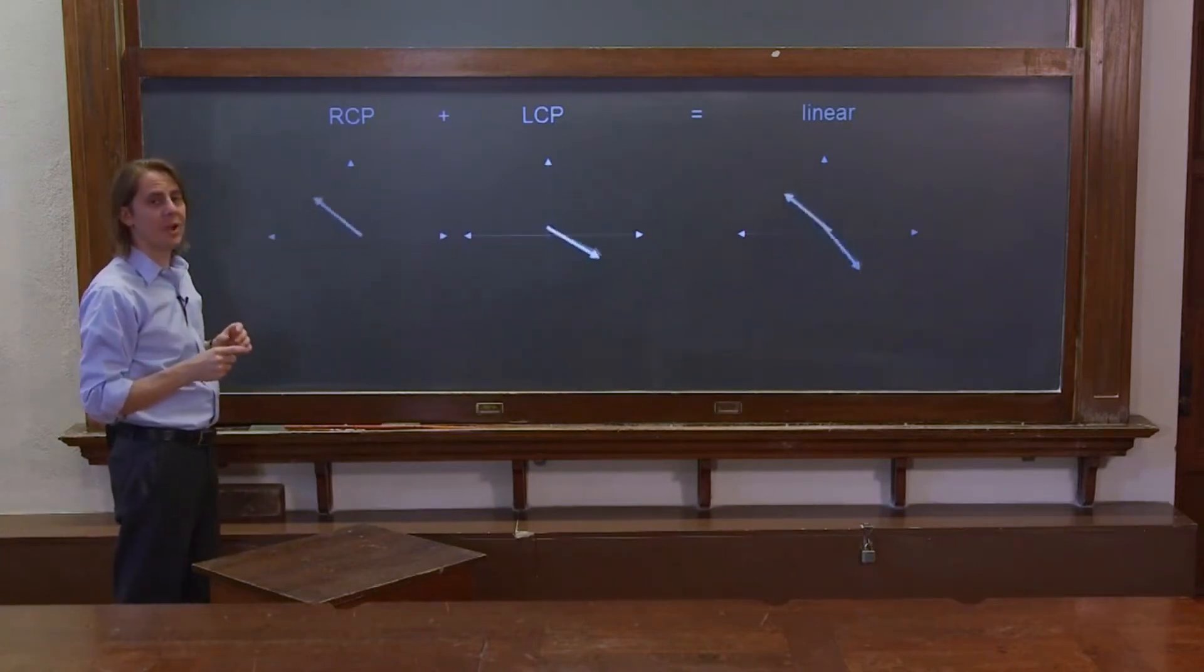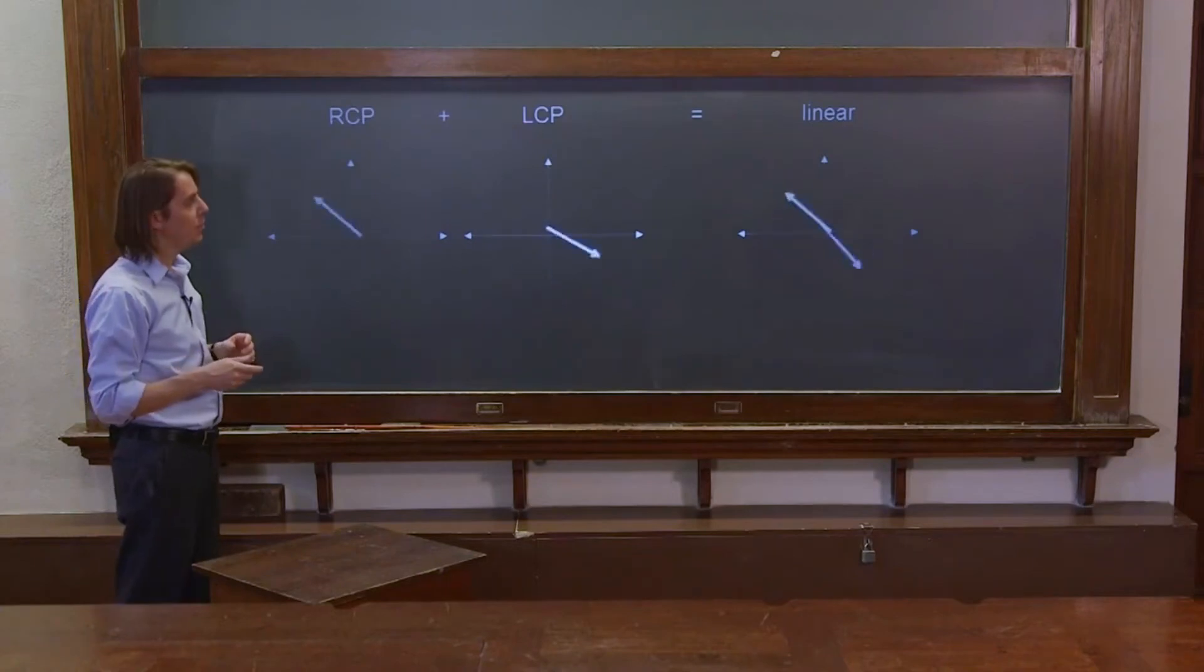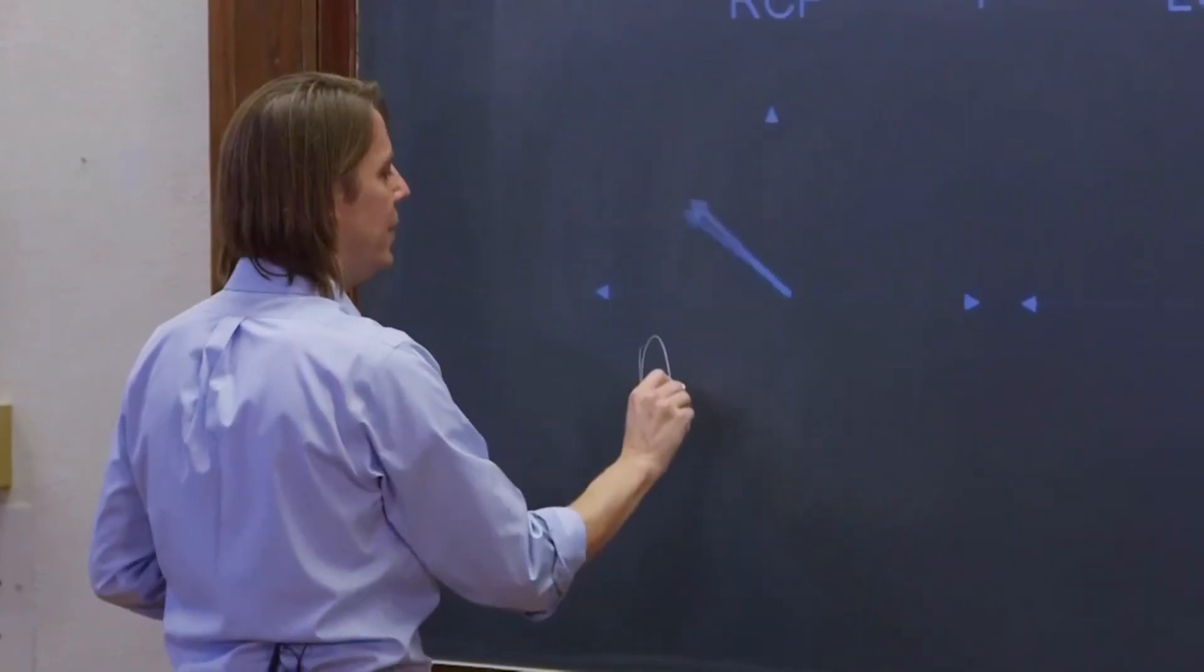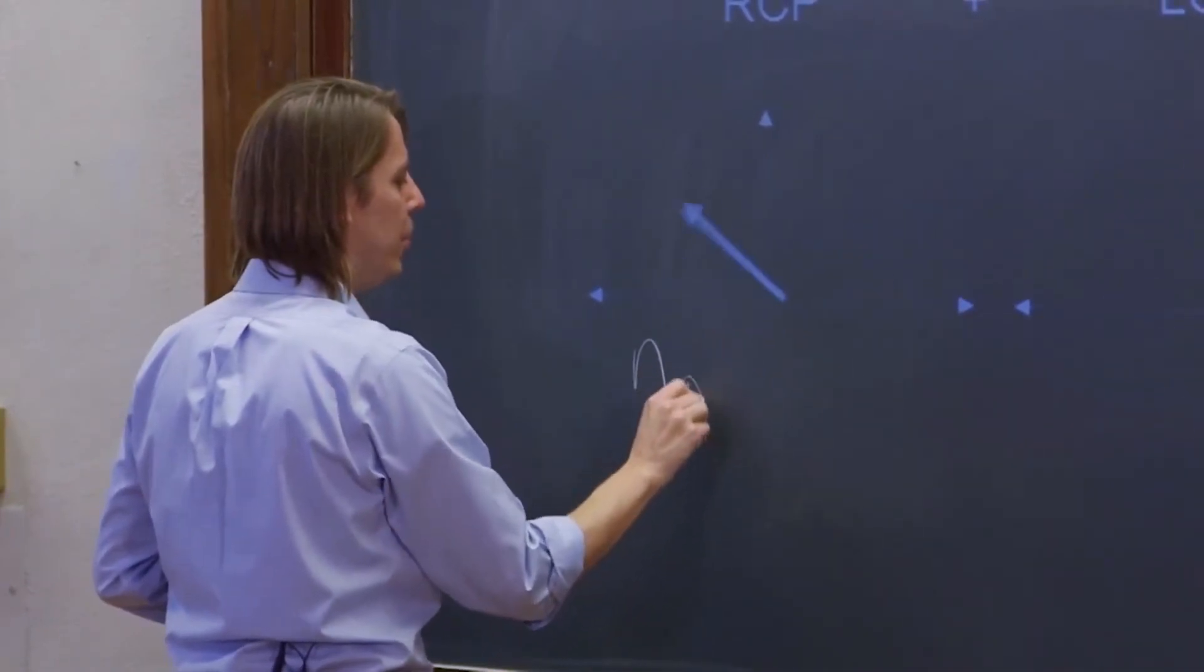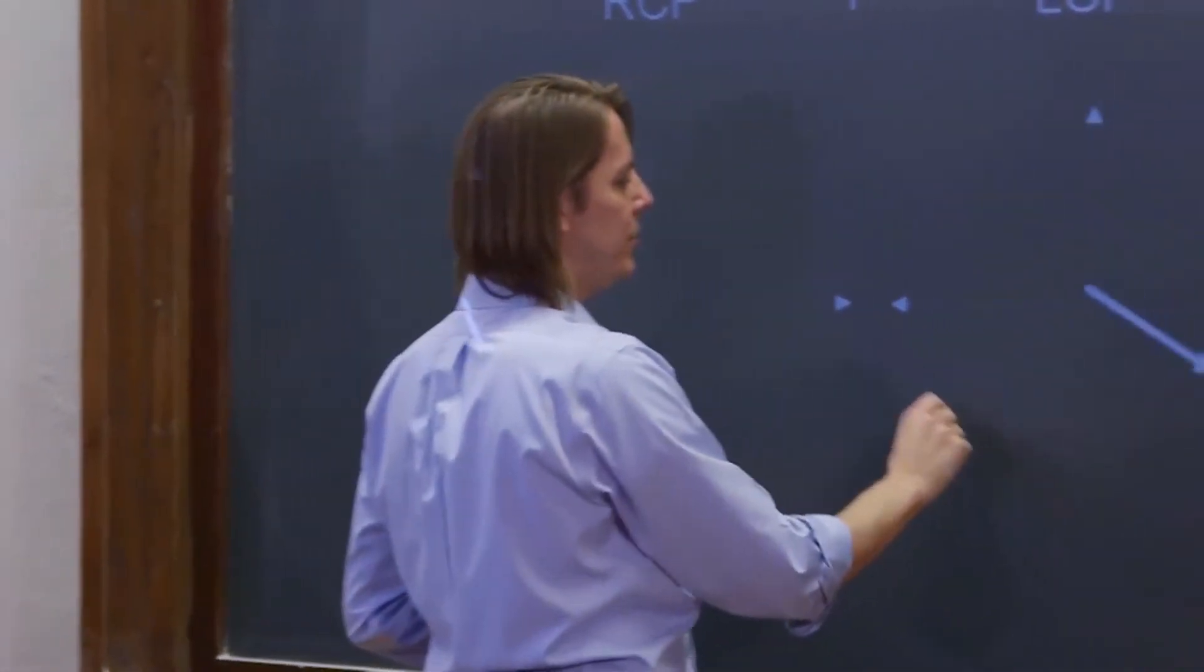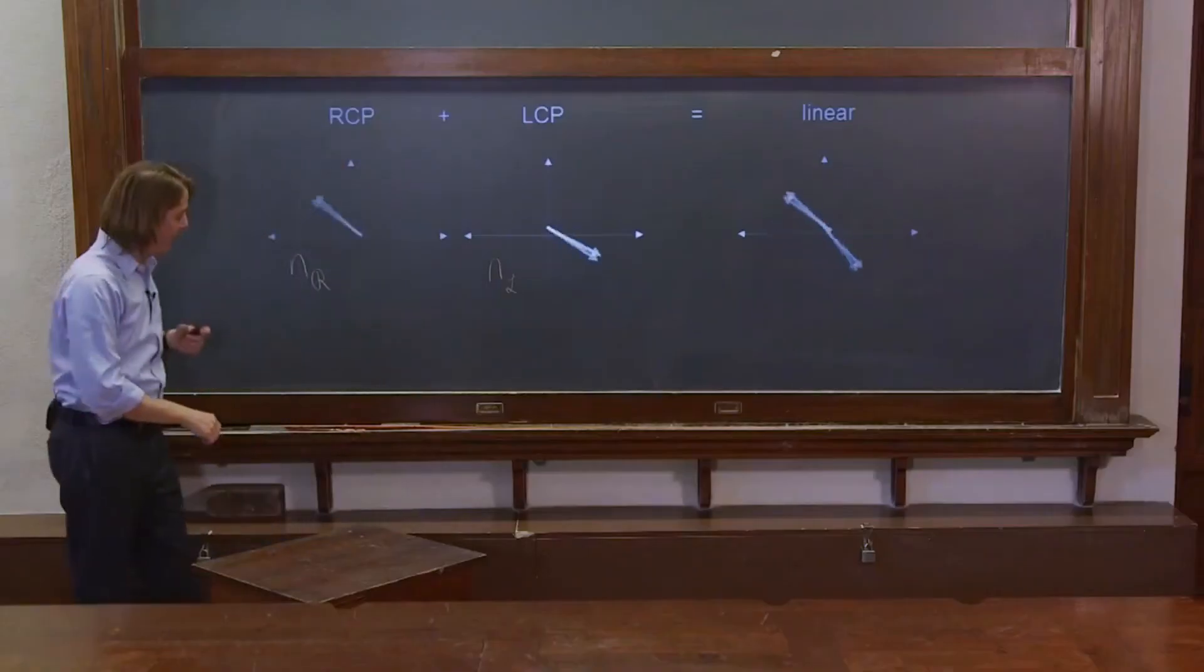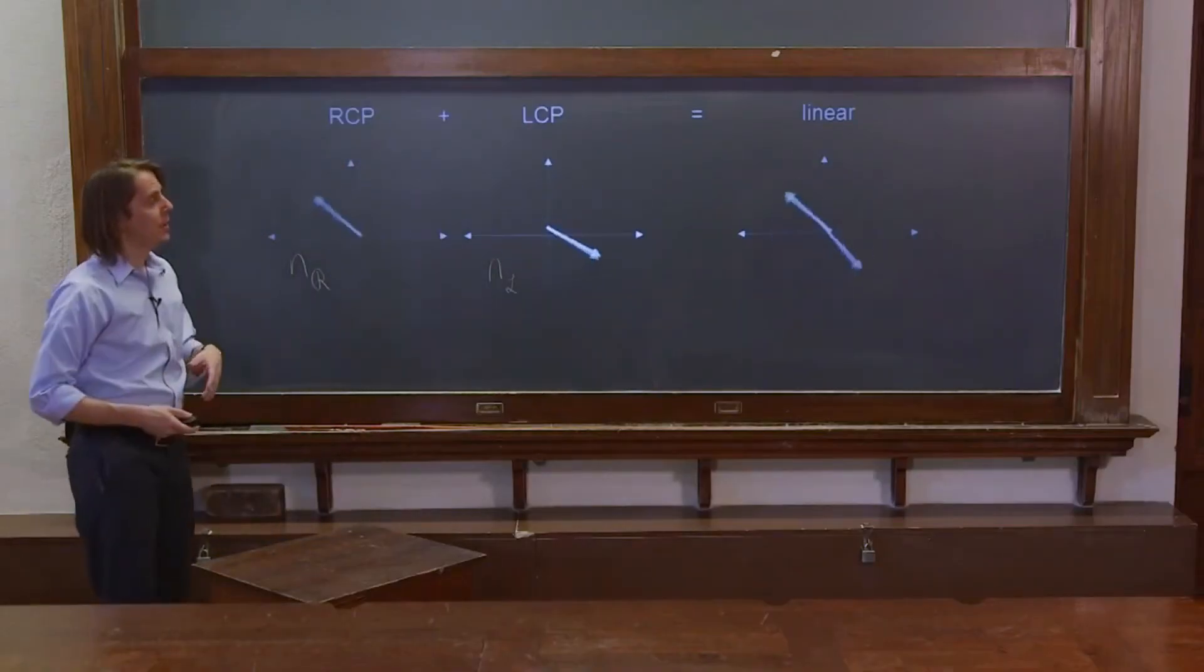For now, just think that you can have what we would call NL. This would experience N, usually drawn with a script little R, and this would experience N with a script little L. They can become anisotropic.